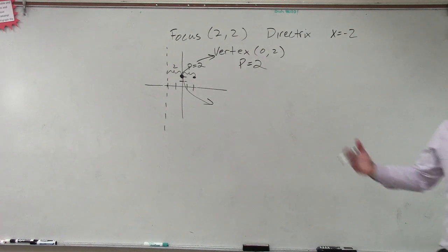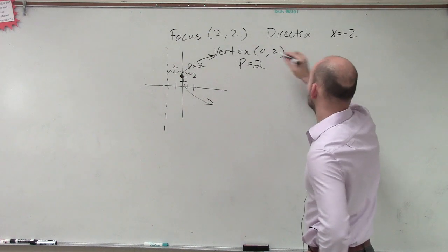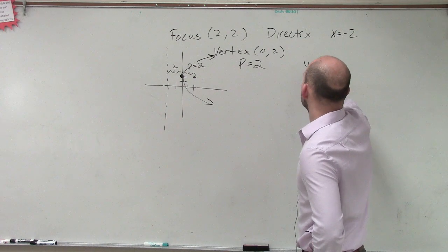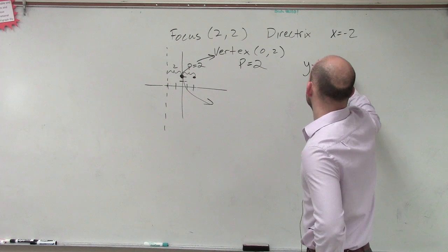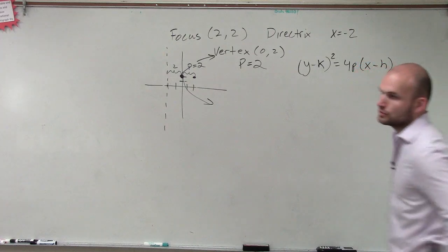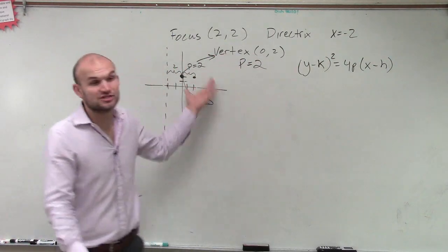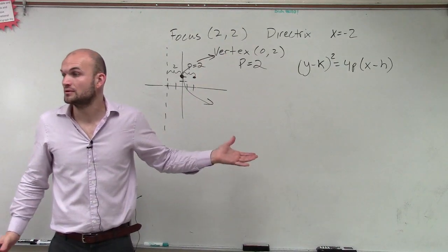Alright. So now, we know that we have a horizontal parabola. So therefore, I have to use... And we know it's going to be y squared. So therefore, I have to do (y - k)² = 4p(x - h). Correct? Yes. We have to use that formula. We can't use the x squared because the x squared is the parabola up and down. Just can't.